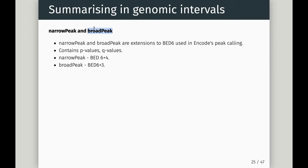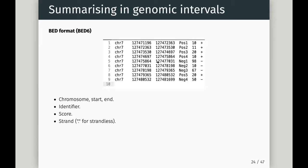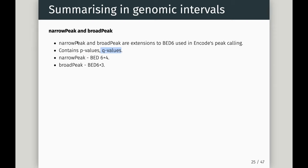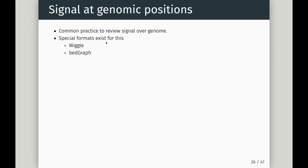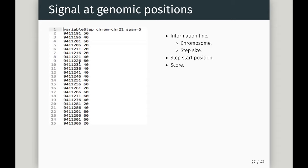A really common practice in genomics is to take aligned data, summarize the signal per base pair, and view it in IGV or a genome browser. Formats exist for this: wiggle and BEDgraph. Wiggle is a variable-step format with an information line specifying the chromosome, a step size, and then start positions with scores. Stepping in steps of five through the genome, you record the score at each position. You can then visualize how signal looks across the genome.